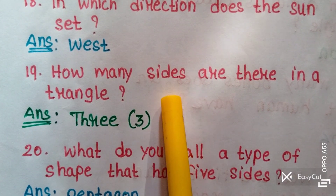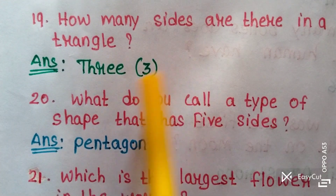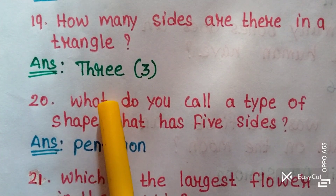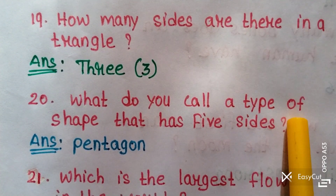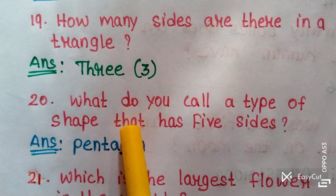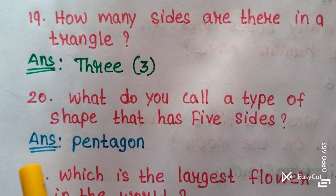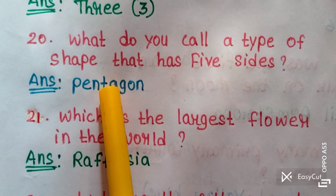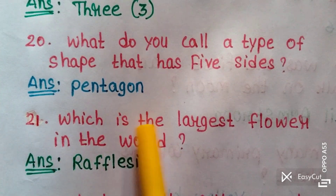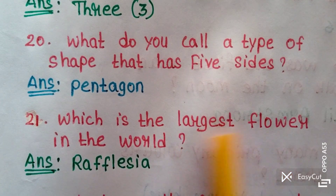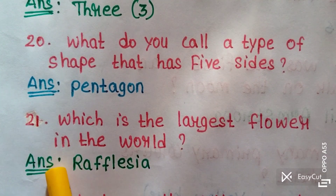There are 3 sides in a triangle. Question twenty: What do you call a shape that has five sides? Answer: Pentagon. Question twenty-one: Which is the largest flower in the world? Answer: Rafflesia.